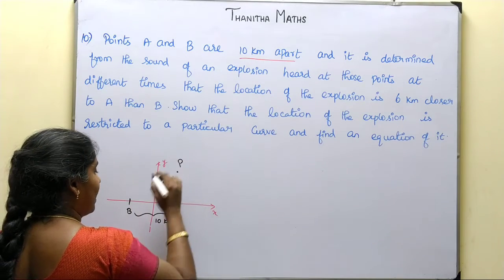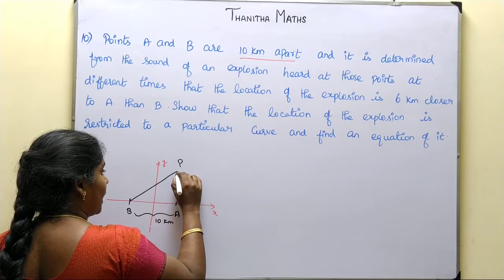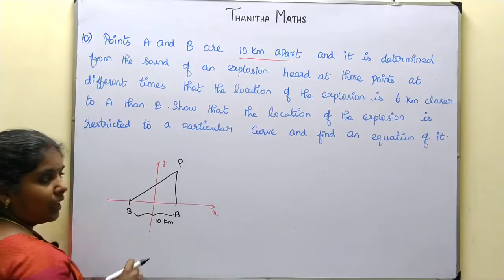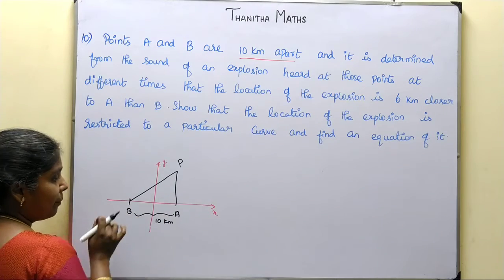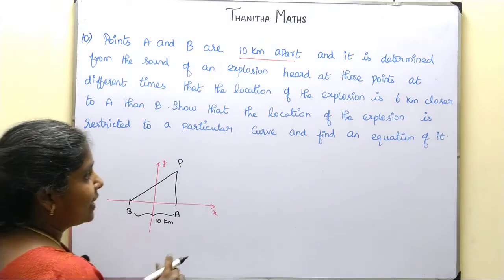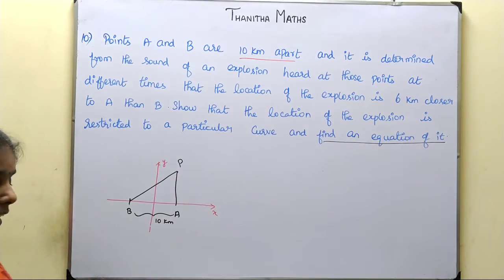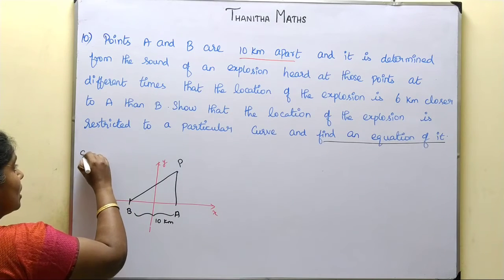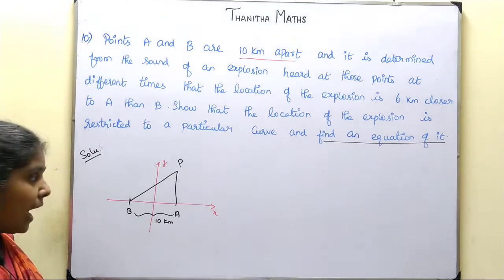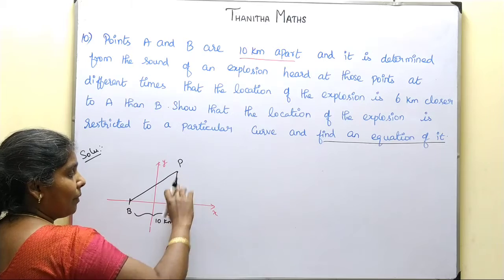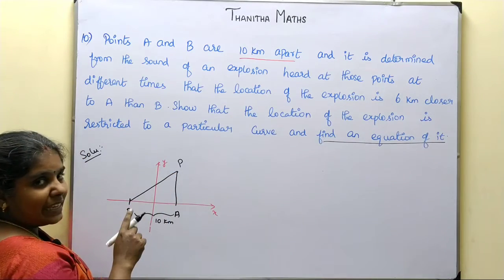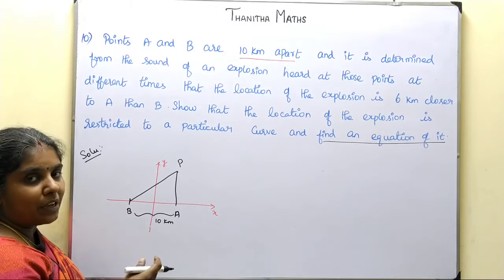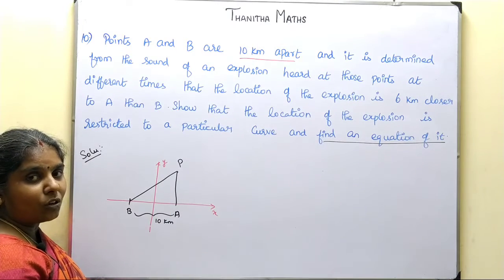If we take the explosion location as point P, then PB minus PA equals 6 km. This is the condition for a hyperbola. The absolute difference of the distances from two foci — that is, F1P minus F2P — equals 2a, which is the length of the transverse axis. So here the difference is 6, which means 2a equals 6.